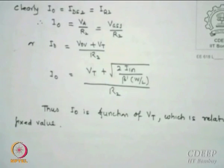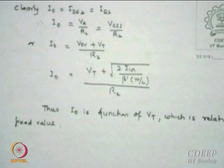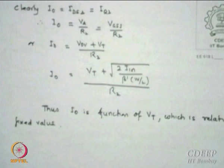So I0 is only a function of VT. VT is normally fixed for a technology - 0.8 volt, 0.7 volt, 0.6 volt. However, the temperature dependence is not very good and not very bad either. We will not analyze DCF for this because a modified version - the regulated cascode - will be shown next.